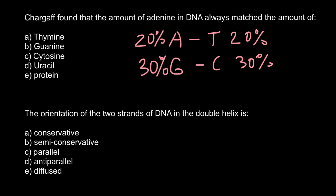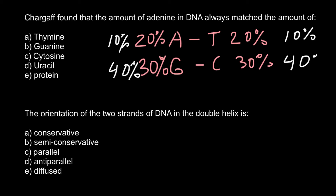For example, if we have 10% adenine, we can determine every other base. If adenine is 10%, then thymine also equals 10%; together these two bases make 20%. So 100% minus 20% gives us 80%, meaning guanine would be 40% and cytosine would be another 40%, so together we have 100%.